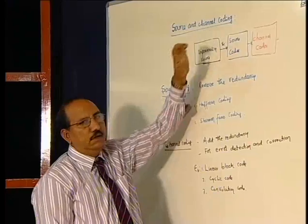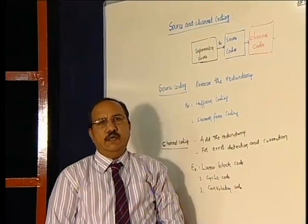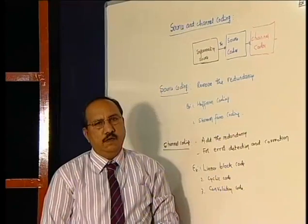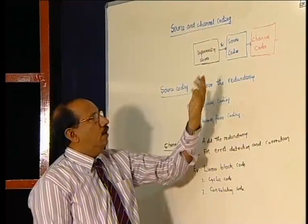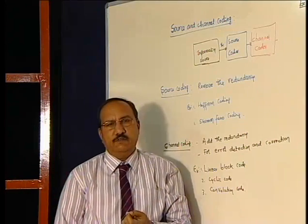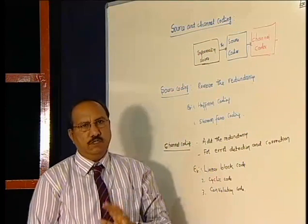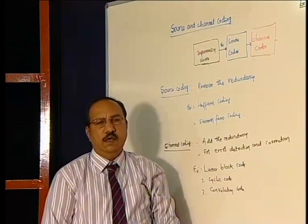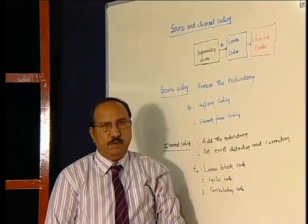Once I have a symbol, one way of assigning, if all the symbols are equally likely, then I can assign a binary code based on how many symbols are there. For example, four symbols, I can assign two bits for each one: 00, 01, 10, 11. But whenever you go for any practical situation, I will not get symbols with equal probability.